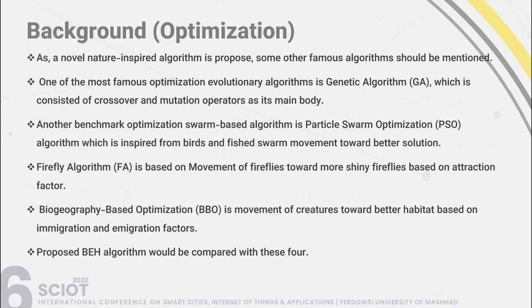As a novel nature-inspired algorithm is proposed, some other famous algorithms should be mentioned. One of the most famous optimization evolutionary algorithms is the genetic algorithm, which consists of crossover and mutation operators as its main body. Another benchmark optimization algorithm is PSO, or particle swarm optimization, inspired from birds and fish swarm movement toward better solutions. The firefly algorithm is based on movement of fireflies toward more shiny fireflies based on an attraction factor. Biogeography-based optimization, or BBO, models movement of creatures toward better habitats based on immigration and emigration factors. The proposed algorithm will be compared with these four algorithms.